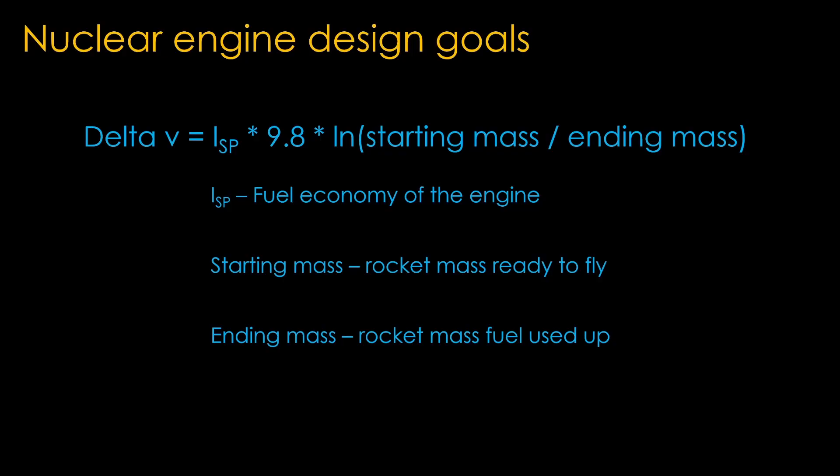There are three ways we can do it. We can use an engine that produces a higher specific impulse. We can create a rocket that has a higher starting mass by packing more propellant into it. Or we can create a rocket that is lighter, with a lighter airframe or a lighter engine.